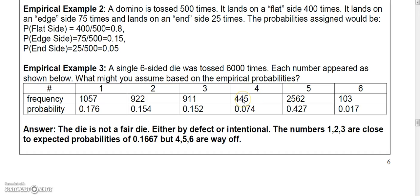And then divide 445 by 6,000 and you get 0.074. And then divide this number, 2,562 by 6,000 and you get 0.427. And then finally divide 103 by 6,000 and you get 0.017.